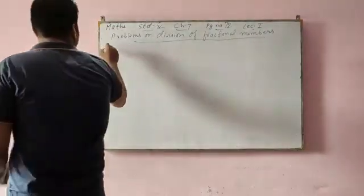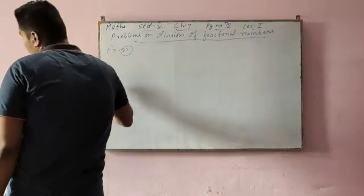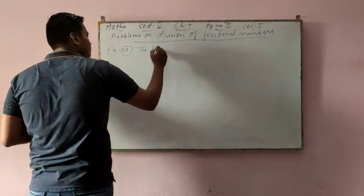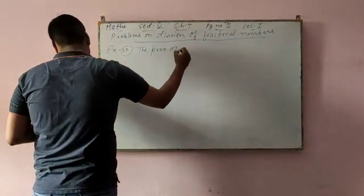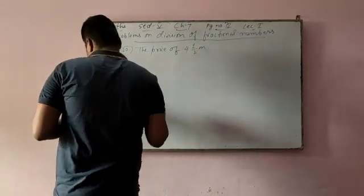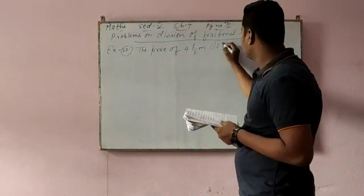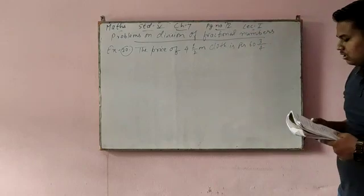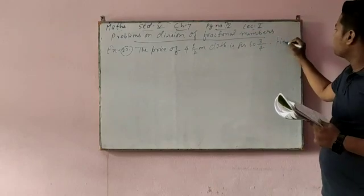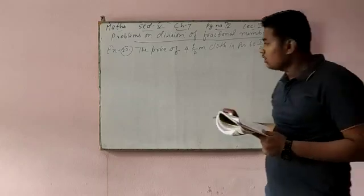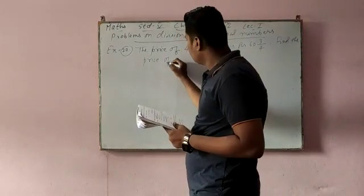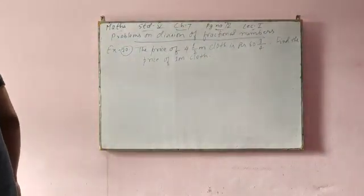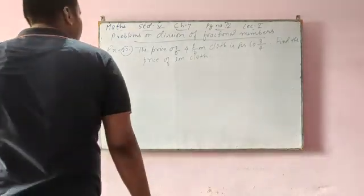So come to example number 20. Question is, the price of 4 and 1 by 2 meter cloth is rupees 60 and 3 by 4 paise. Now, find the price of 1 meter cloth.